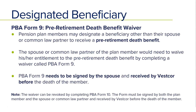Form 9 is the spouse waiving their death benefit — it's just a waiver. If at any point the spouse would want to revoke that, both you and the spouse would need to sign a Form 10 to revoke it.